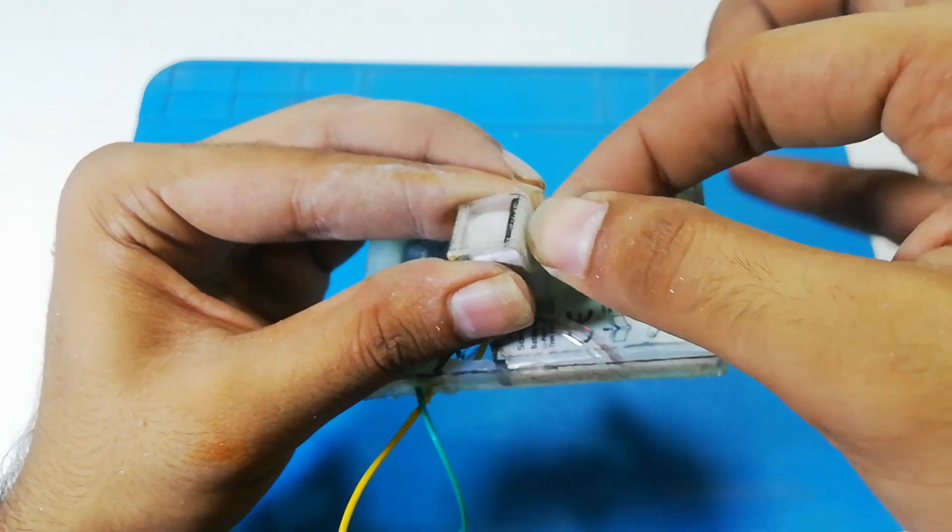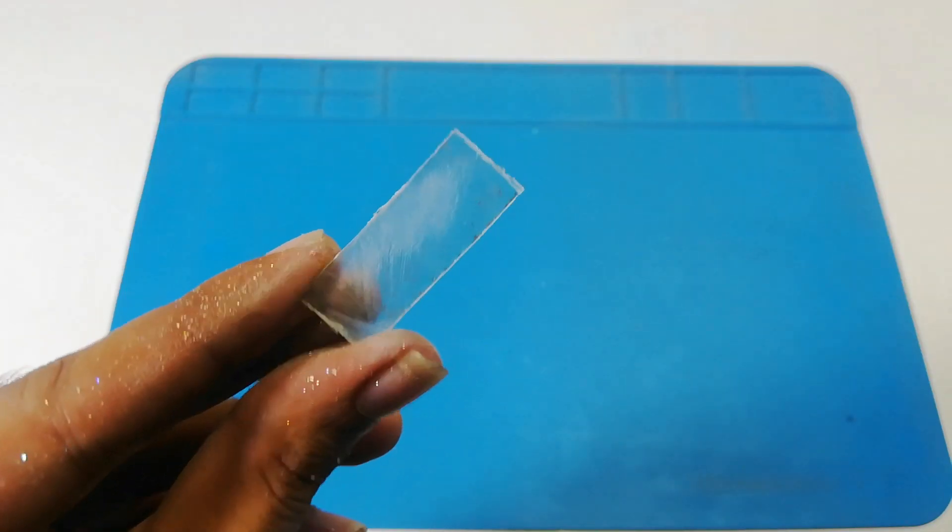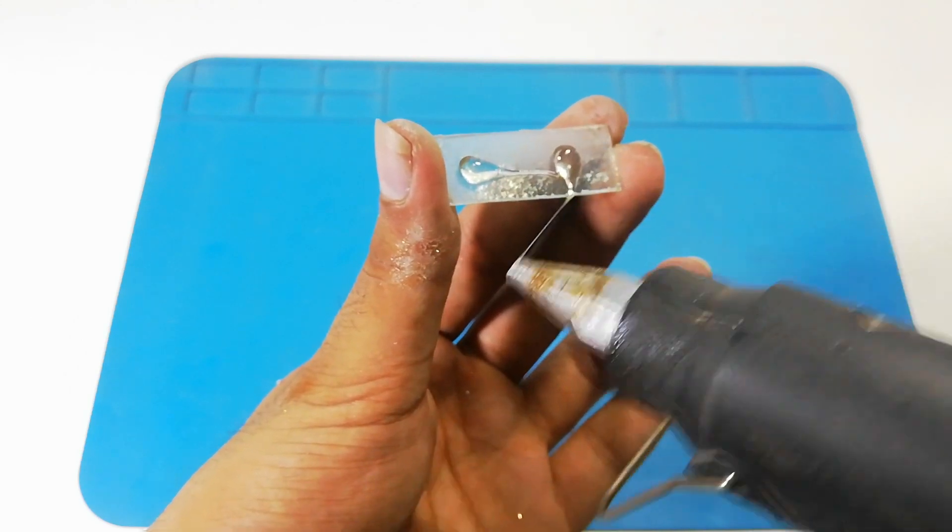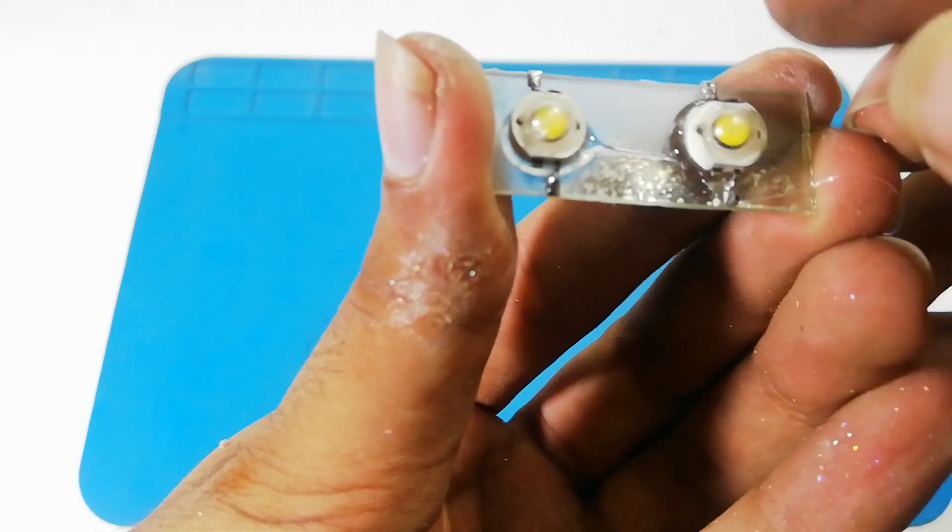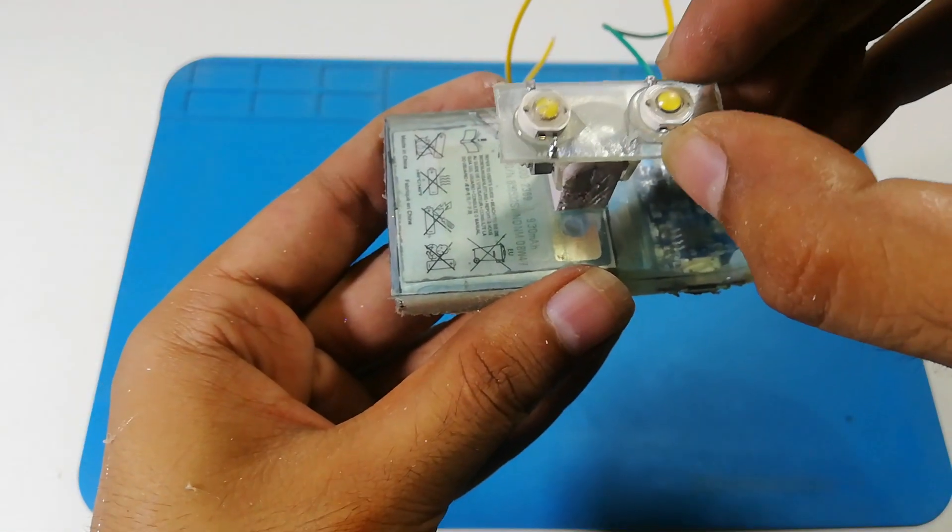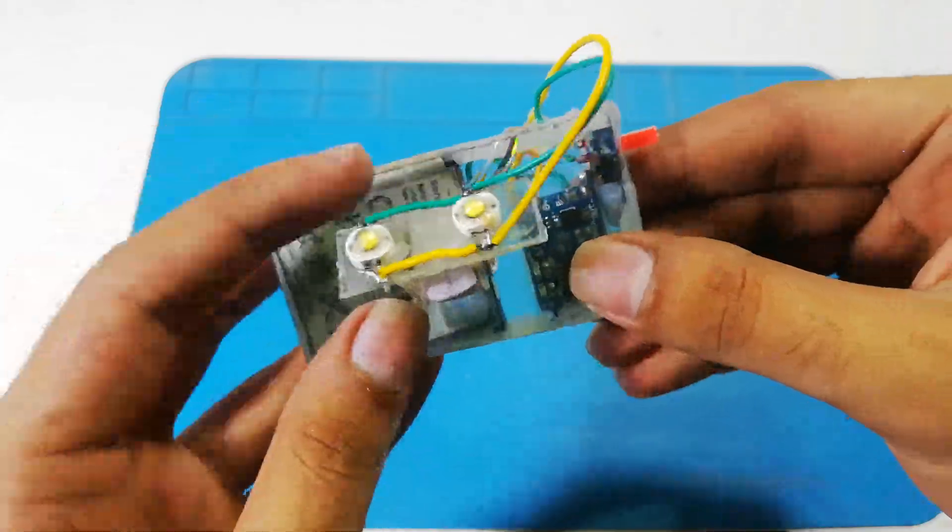Now take another plastic strip and place both LEDs with some hot glue. Here I made a mistake of using hot glue, so you must use epoxy or some heat resistant glue for this purpose. Now attach it over the U-shape piece. Make the LED connections.